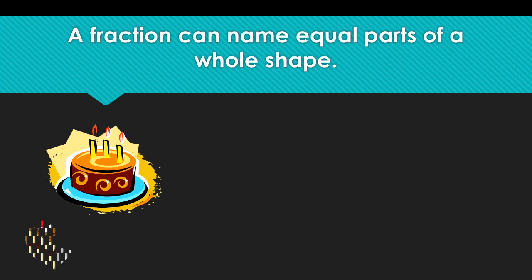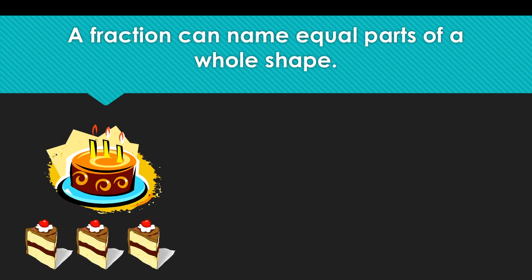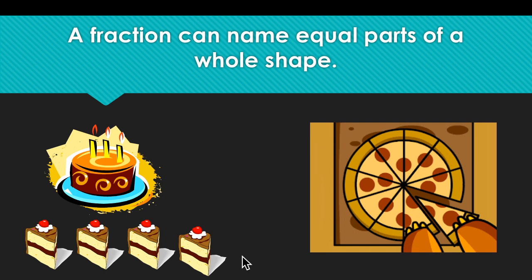To understand it better, we have a whole cake. The shape of a cake is round, like a circle. The cake can be cut into pieces. This cake was cut into four equal parts, and these four equal parts make a whole round cake.